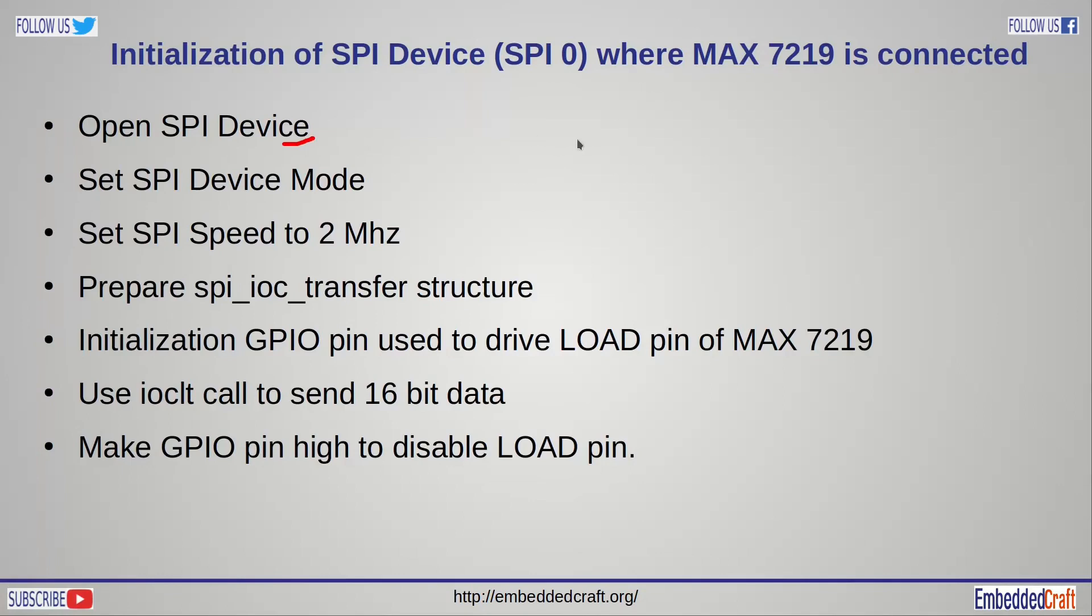First we will open SPI device, set SPI mode, set SPI speed to 2 meg, prepare SPI IOC transfer structure. Initialize GPIO pin to make load pin low. Send data using IOCTL system call. Make GPIO pin high to disable load pin.